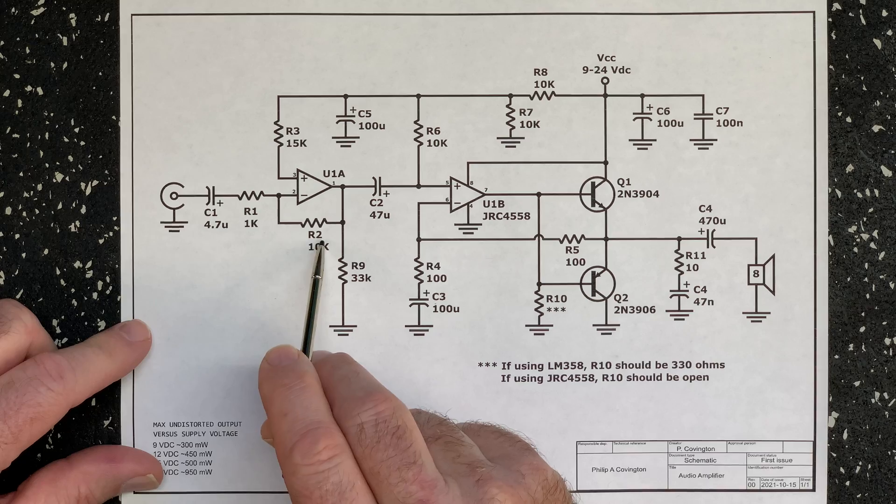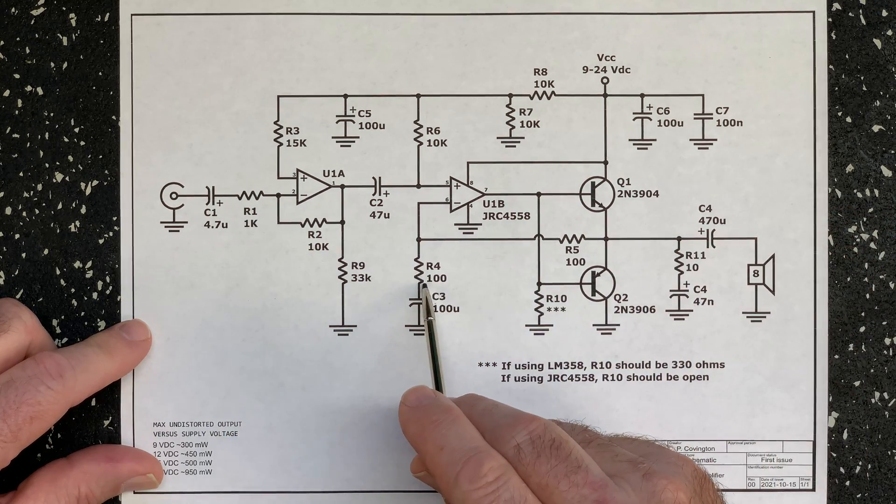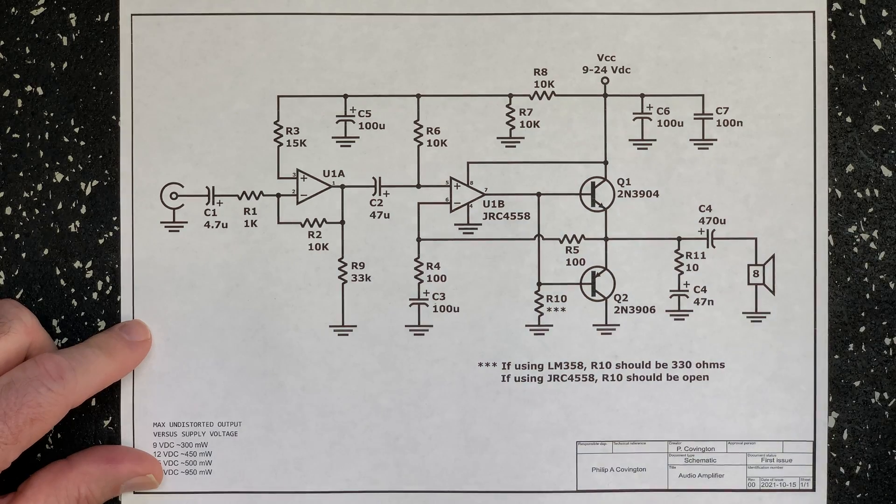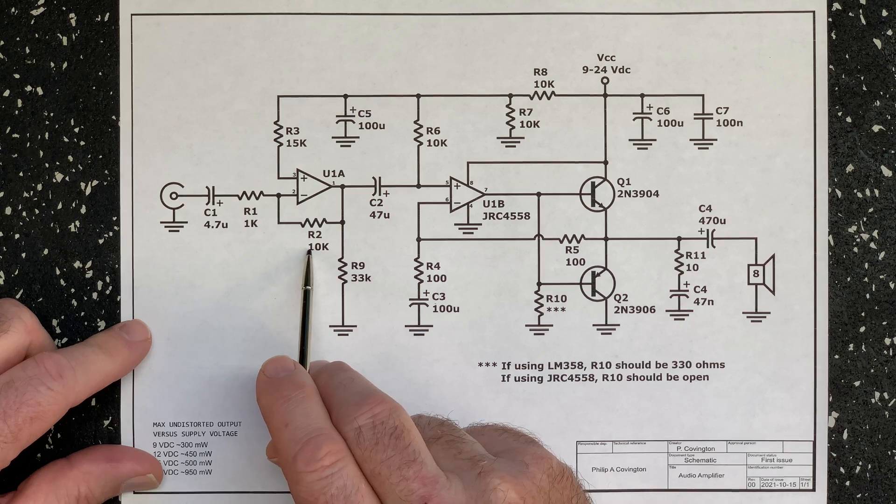Even the lowly LM358 op amp gives satisfactory results. In the schematic, I have the gain of the op amp set at 10 times. The second op amp gives a gain of 2 times for an overall gain of approximately 20 times.